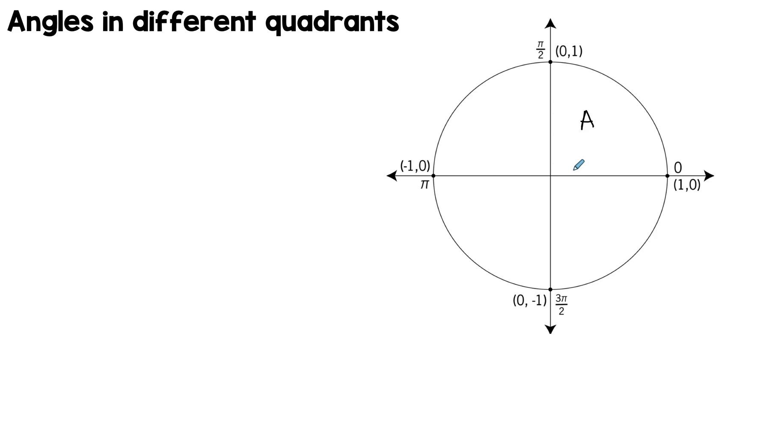If you take anything in this second quadrant, from 90 until 180, so these are your obtuse angles. These are your acute angles, and then you have your obtuse angles there. Then only sine will be positive, everything else will be negative.